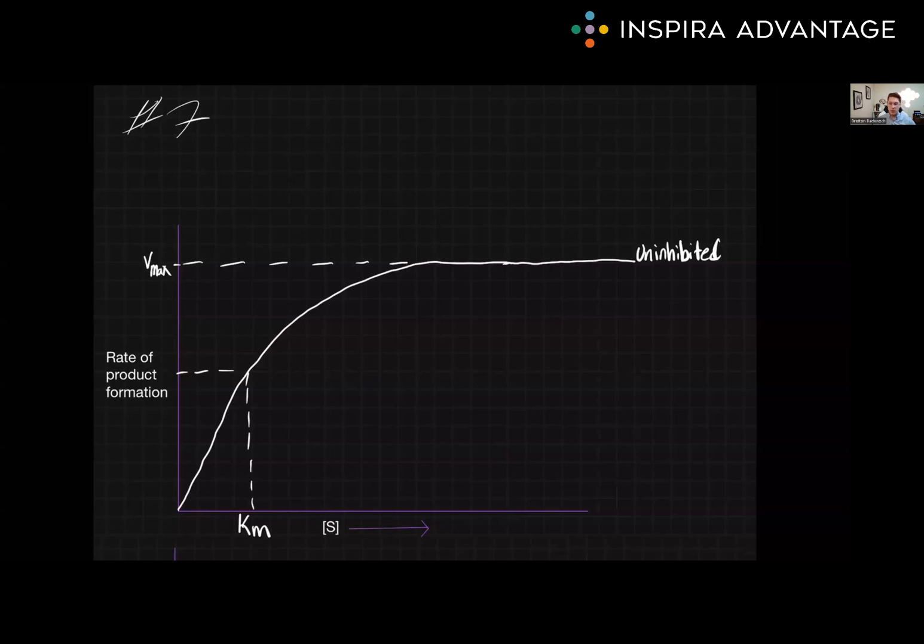You'll see the axes are substrate concentration on the X and the rate of product formation on the Y. On the Y axis, we've labeled a value called Vmax. Vmax is when the rate of the reaction is no longer influenced by substrate concentration. Essentially, it's going as fast as it can possibly go. Vmax is a constant that is dependent on the specific enzyme and the concentration of the enzyme. So if you mess with the amount of enzyme that's functioning properly, you will affect the Vmax.